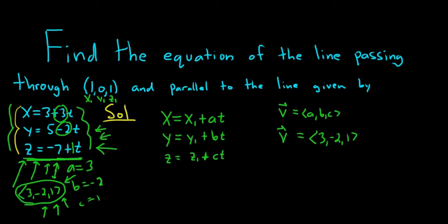Now, all we do is plug in the numbers, and we are done. So let's go ahead and do that. So x is going to be 1, and then our a is 3. So plus 3t. That's our a.